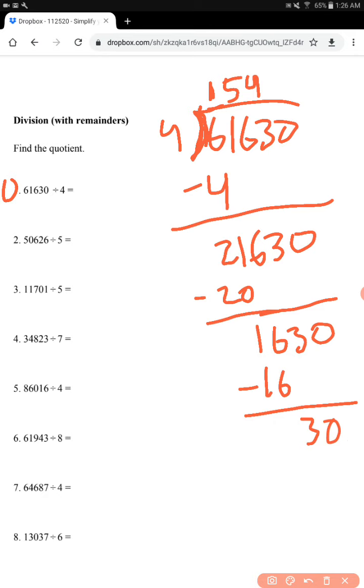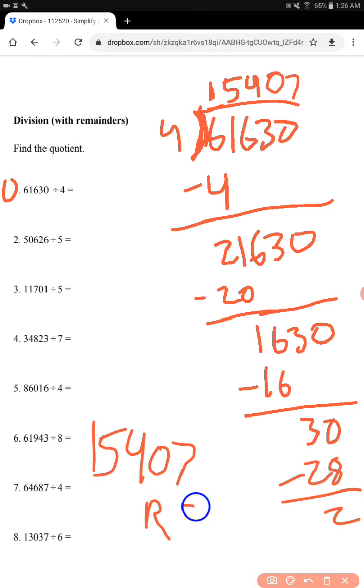So 4 can go into 30, 7 times, so it's not 70. It's just 7. So it'd be in the 1's place, and there'd be a 0 right here. So 30, 28, 7 times 4 equals 28. And then you're left with 2. So your answer is 15407 with a remainder R of 2, R2. Alright.